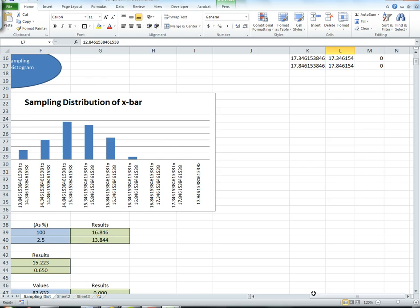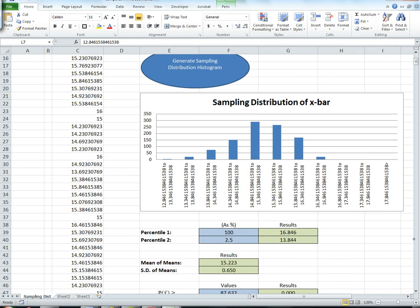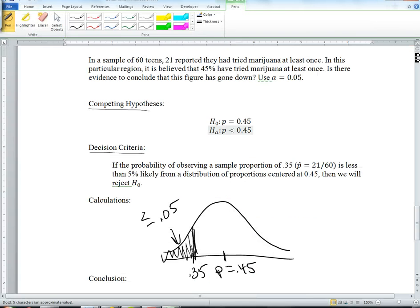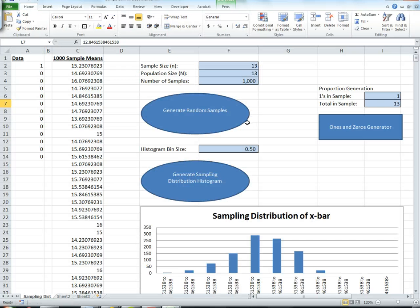Actually, in our distribution, what we'll do is create a simulation of the null hypothesized population distribution. So we're going to create a distribution with center 0.45. How are we going to do that?